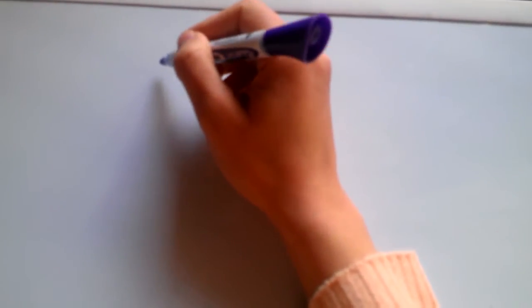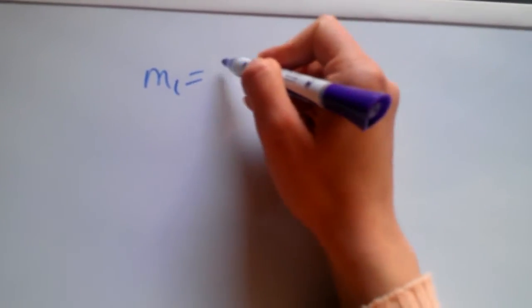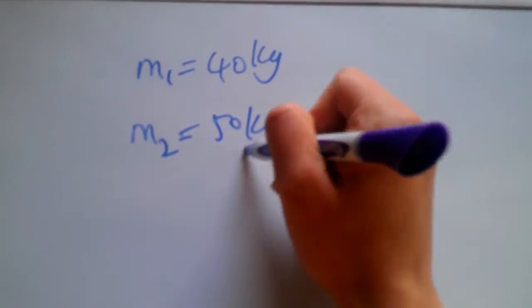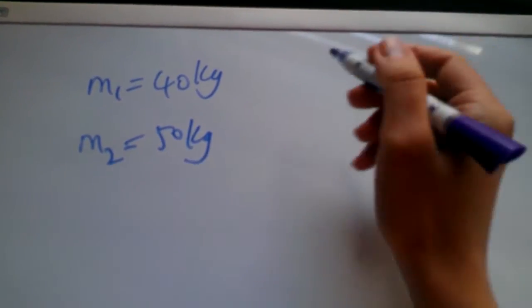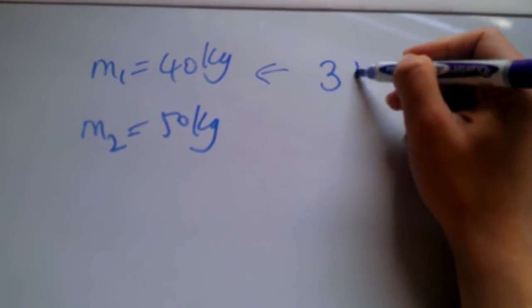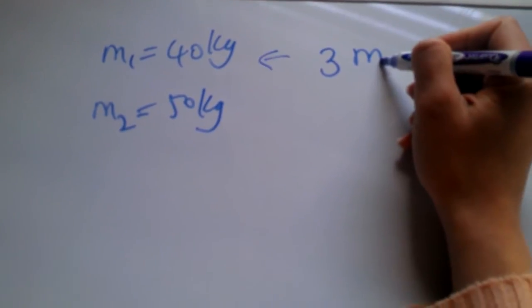So going on with that, let's just do this one. Two kids with masses of 40 and 50 kilograms, so there are two kids on a seesaw with mass of 40 and 50 kilograms.